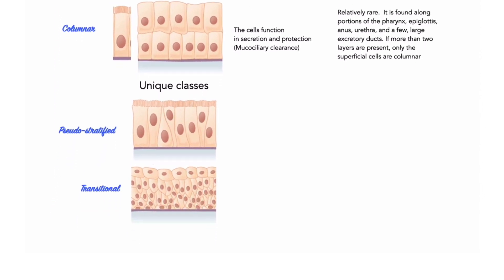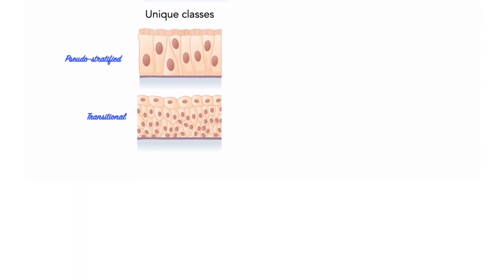Now to our unique classes of epithelial tissue. First, pseudostratified epithelia. These are actually a simple layer. They only appear to be stratified, hence the name pseudostratified, for false stratification. Their functions are much like those of true, simple columnar epithelia. They protect, they secrete, they move mucus with cilia. We find these particularly in the lining of the nasal cavity, trachea, bronchi, and portions of the male reproductive tract.